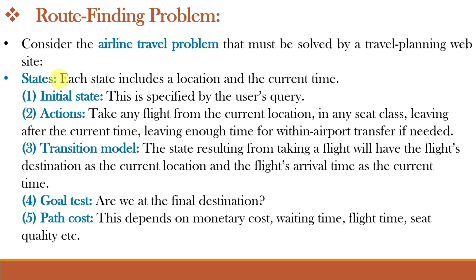For this airline travel problem, the different states each include a location and the current time. The initial state is specified by the user's query — where the user wants to travel. The actions are: take any flight from the current location in any seat class, leaving after the current time, and leaving enough time for within-airport transfer if needed. The transition model returns the next state: the flight's destination as the current location, and the flight's arrival time as the current time. The goal test checks whether we are at the final destination, and the path cost depends on monetary cost, waiting time, flight time, seat quality, etc.